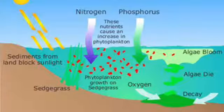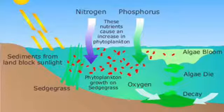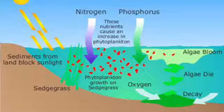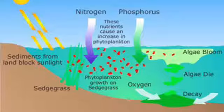This picture also shows the process of eutrophication and how nitrogen, phosphorus, and sediments from land enter water. It also describes how sediments from the land block the sunlight from entering the water, decreasing the rate of photosynthesis.